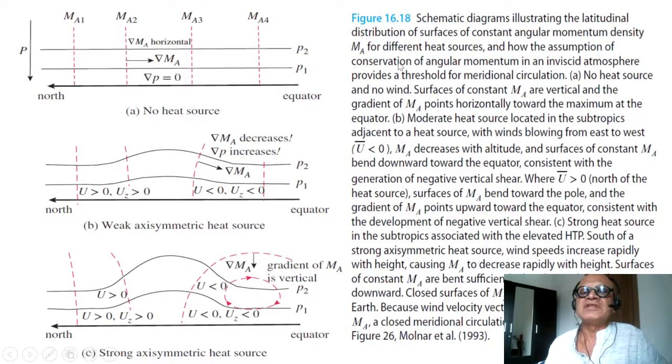This diagram illustrates the latitudinal distribution of surfaces of constant angular momentum for different heat sources: no heat source, weak axisymmetric heat source, and strong axisymmetric heat source. We are looking at the zonal mean meridional plane and how the distortion of the constant angular momentum lines is affected.